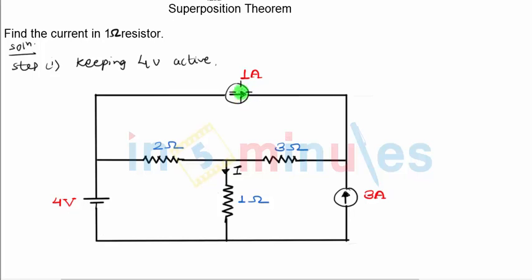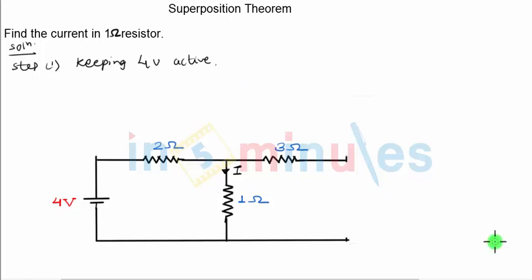So if I do that, you can see both the current sources have been open circuited, removed from the circuit, and this is the equivalent circuit that we get. So now we find out the value of current I, I'm going to call it I1, and this I1 will represent the value of I only due to four volts.